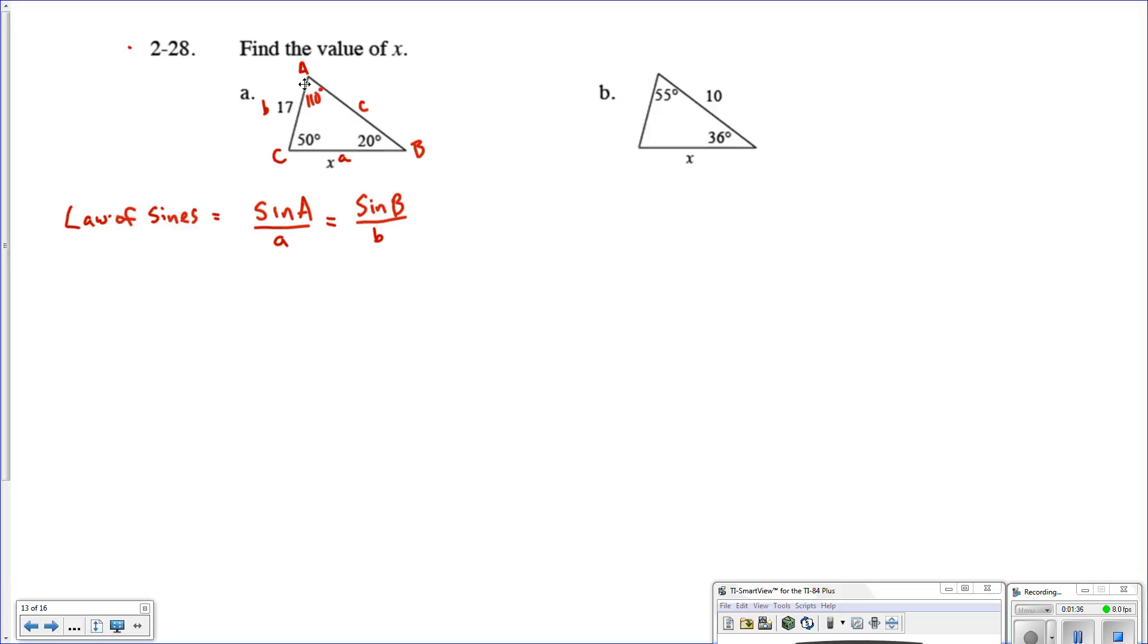So let's try it and see here. We're going to say the sine of 110 degrees over x, over the side that's opposite it, should equal the sine of 20 degrees over the side opposite it, which is 17. So the sine of 20 degrees over 17. We have a ratio equals a ratio, which is a proportion, which means that if we multiply this numerator times this denominator, it should equal the product of the other two.